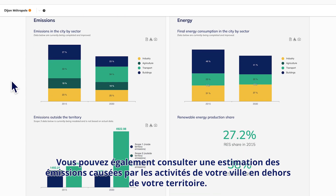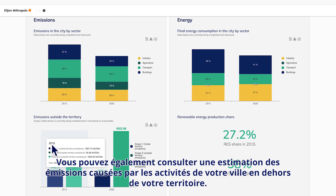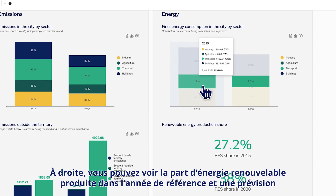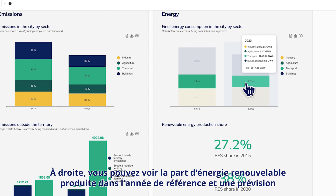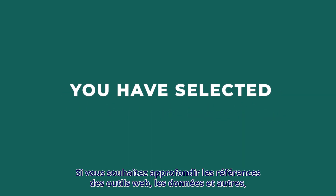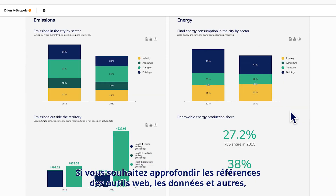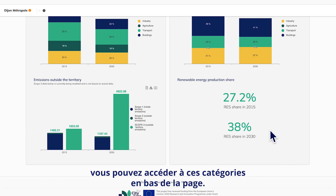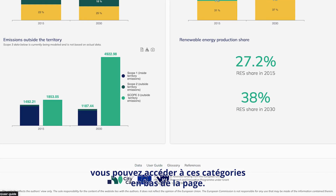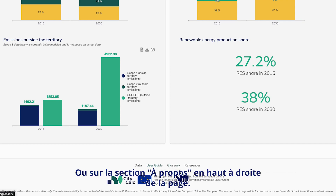You can also observe the estimated emissions caused by your city's activities outside of your territory. To the right, you can see the share of renewable energy produced in the base year and an expectation based on the transition scenario you have selected. If you are interested in diving deeper into the web tool references, data and beyond, you can access those categories from the bottom of the page or on the about section on the top right of the web page.